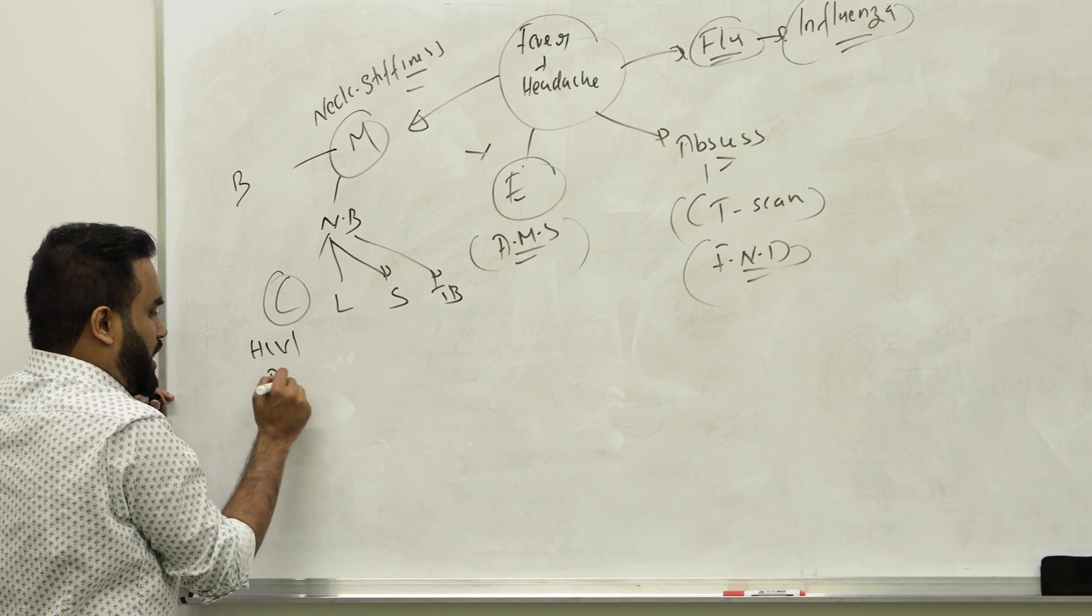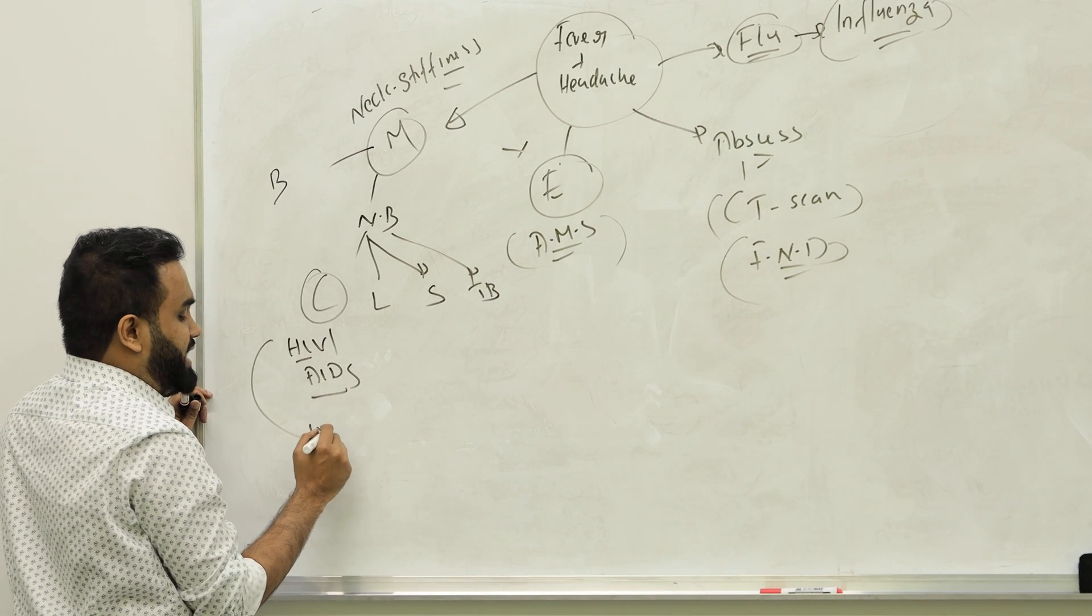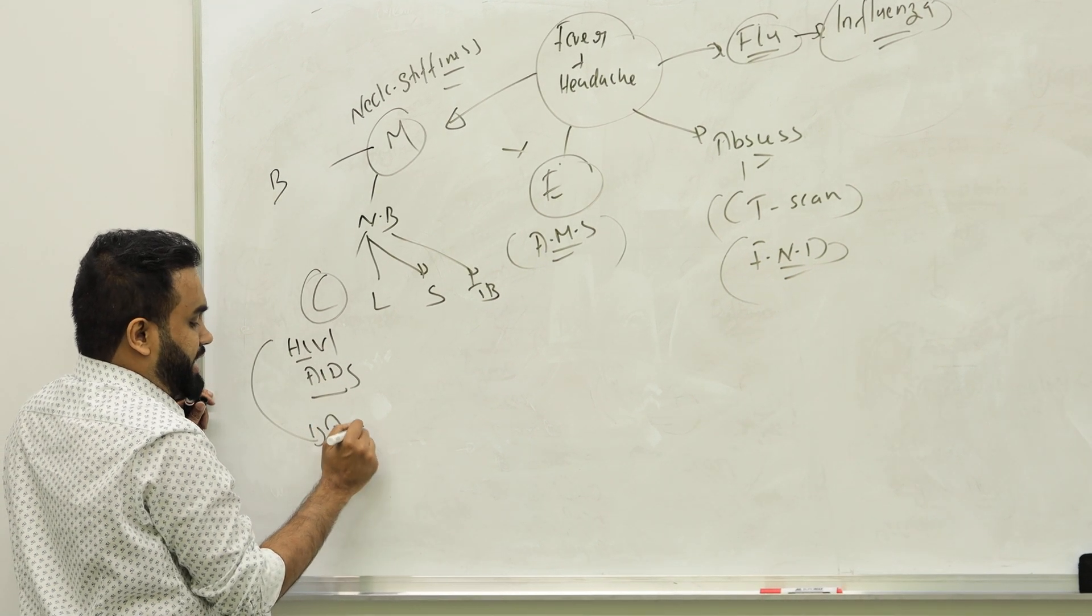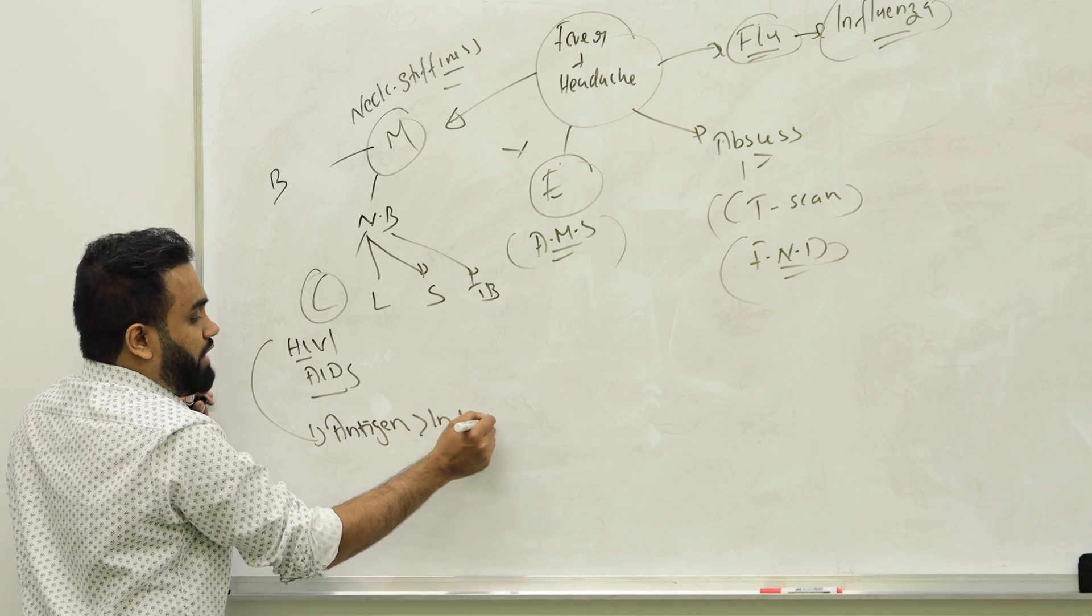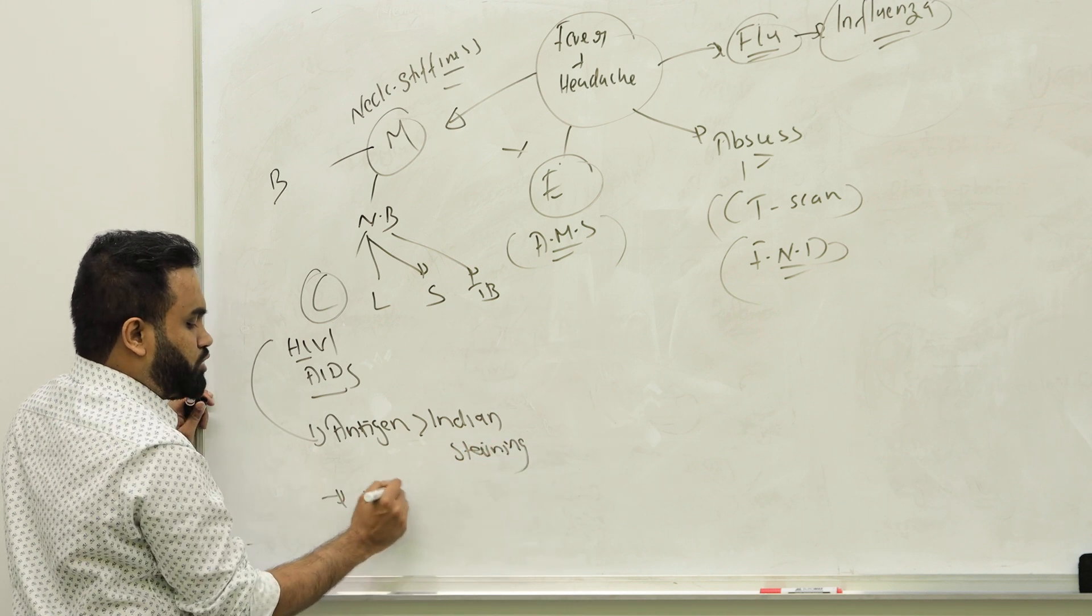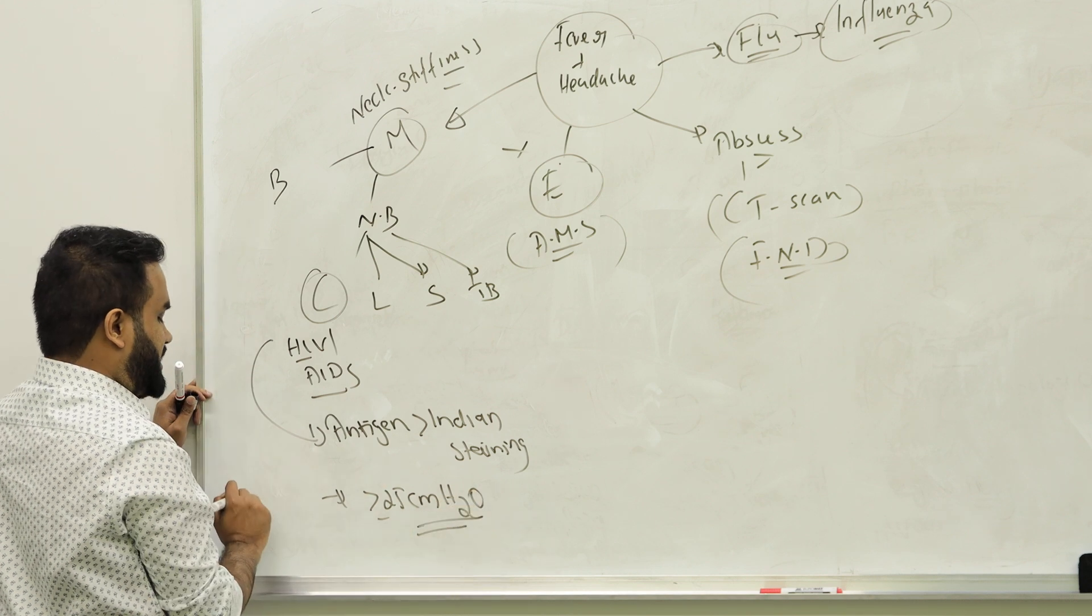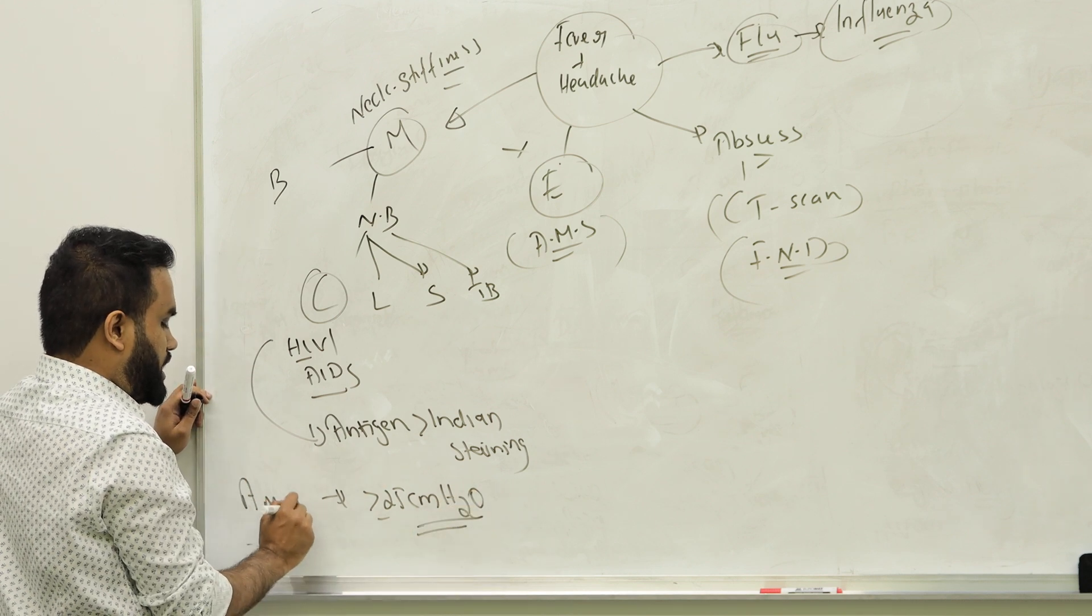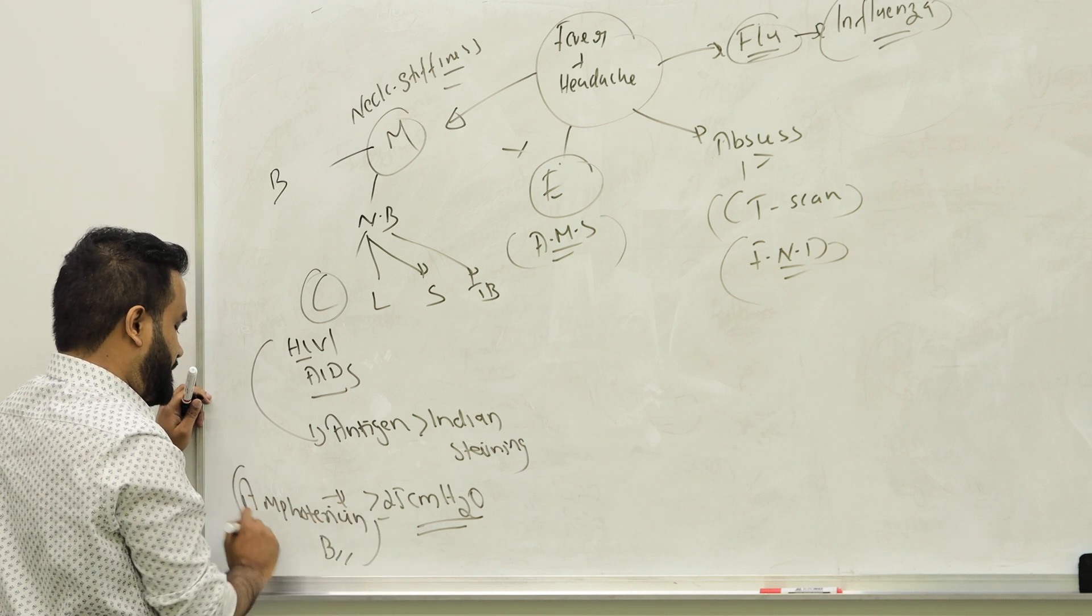In cryptococcosis, remember we will take something called—sorry, HIV and AIDS, I think I forgot to add a point there. In HIV and AIDS remember we use a stain here. We use antigen staining. In exam they will give you Indian ink, but Indian ink comes after antigen. They will have an intracranial pressure more than or equal to 25 centimeter water. The treatment here for cryptococcosis is amphotericin B.